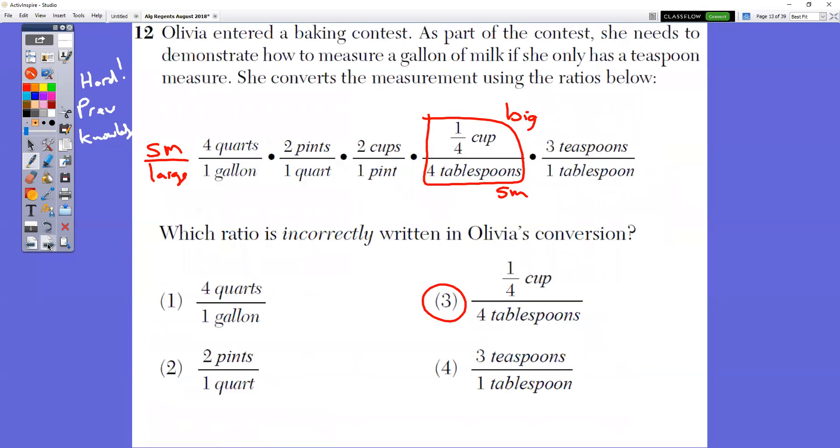In question number 12, this one's a hard one. You have to know some of these and how they set this one up to convert it is they have the smaller over the larger. So four quarts, quarts are smaller than gallons. Pints are smaller than quarts. Cups are smaller than pints. Teaspoons are smaller than tablespoons. Which ratio is written incorrectly? Well, it would be this one because this is the only one that does a bigger thing over a smaller thing. This was a very, very hard question because if you didn't know which one was bigger, you would have no clue which one it is. But a tablespoon is smaller than a cup. So this one is reversed. It's flipped. That one's very hard.